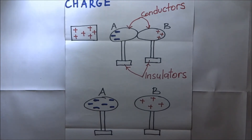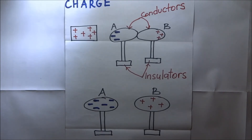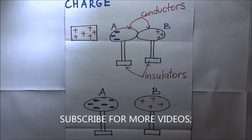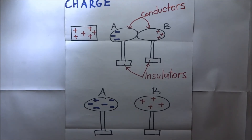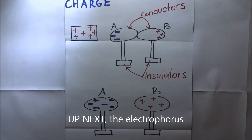That is how we induce two opposite charges from one type of charge. We should note that in conductors, it is only negative charges that flow. Up next, we study the electrophorus — a device used to produce an unlimited amount of charge.